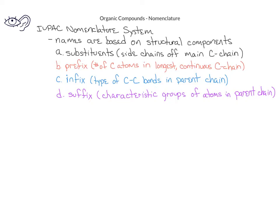Now that we've seen the different parts of the names, we'll look at three of these parts in more detail. Specifically, we'll look at how to name the prefix, the infix, and the suffix, because these parts of the names are present in all organic compounds. Later on, we'll look at how to name the substituents, because many organic compounds will have these side chains or substituents.